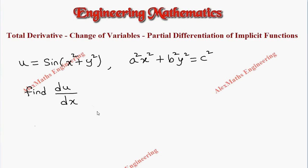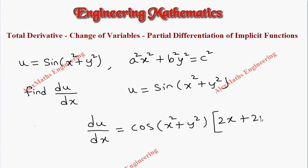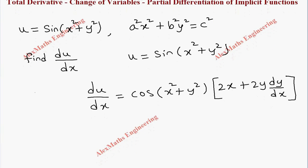When I differentiate u — where u is sine of (x² + y²) — with respect to x, the outer function is sine, so it becomes cos(x² + y²). Then, using the chain rule: the differentiation of x² is 2x, and the differentiation of y² is 2y into dy/dx. Now we need to find dy/dx from the given constraint expression and substitute it here.